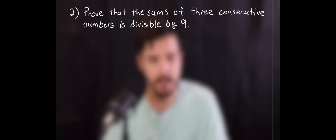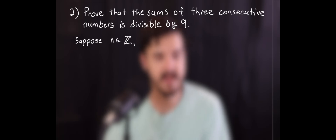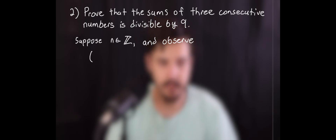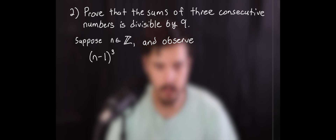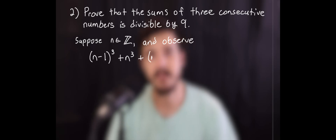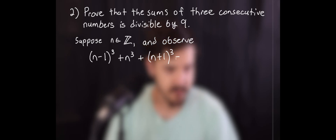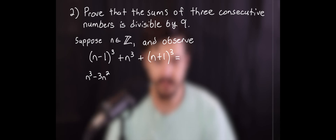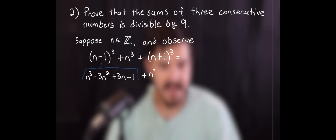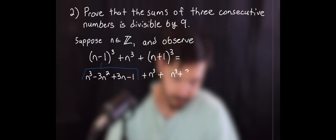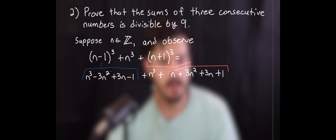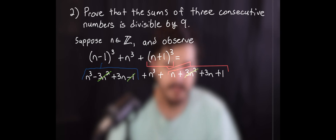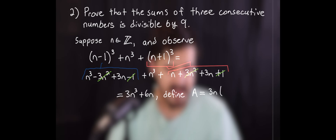For our second problem, we're going to prove that the sum of three consecutive cubes is divisible by nine. To begin, we're going to assume we have some integer n and write out the sum of three consecutive cubes as n minus one cubed plus n cubed plus n plus one cubed. We're going to expand the left and right terms: n minus one cubed becomes n cubed minus three n squared plus three n minus one, and n plus one cubed becomes n cubed plus three n squared plus three n plus one. The three n squared terms and the ones cancel, leaving us with three n cubed plus six n, which we define as a.